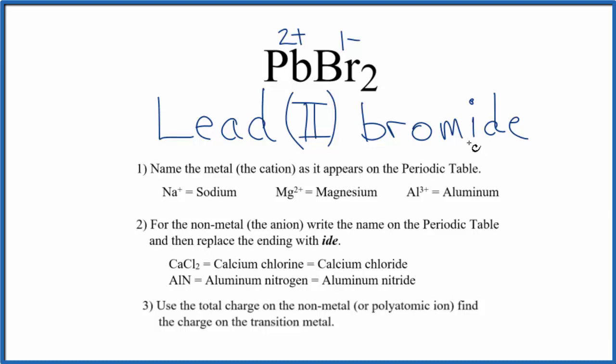If you're given this name and you need to write the formula, you know the lead has a 2 plus ionic charge, because you'll see the 2 here. Then bromine always has a 1 minus ionic charge, so you'll need 2 of these bromide ions to balance out the lead.